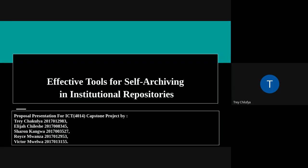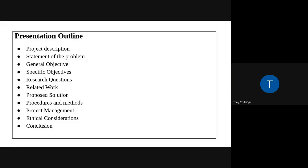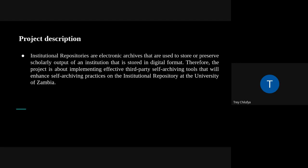Researchers use self-archiving to store their scholarly work in institutional repositories and to make their work accessible to the community of their choosing. An institutional repository, on the other hand, is a specialized type of digital library that is used by higher education institutions to make available their scholarly research outputs.